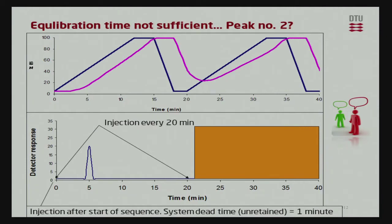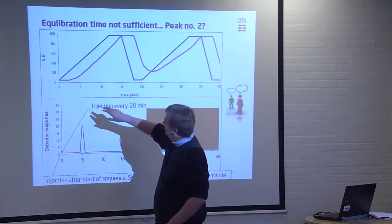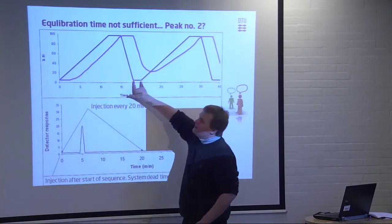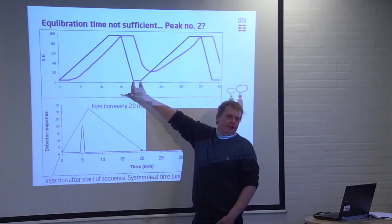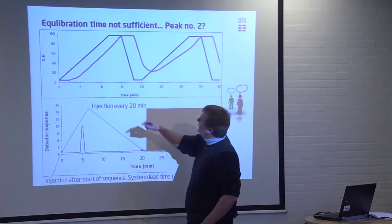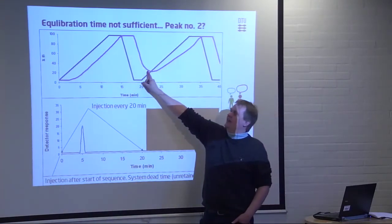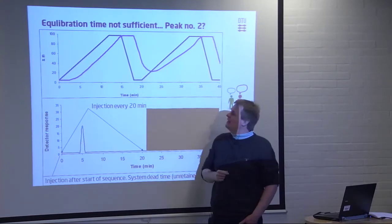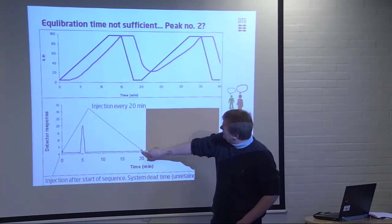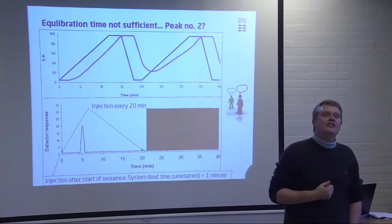And, you have another small assignment here. So, let's say that you programmed it in, and you say, well, I just need two minutes for it to equilibrate after the gradient, and then I'm happy. Then what you really get is this purple curve. So, you can also see we don't get down to the percent organic we think we get, and what do you think happens? If we inject it again here, 20 minutes, here, and we are here, what would happen? We will have good retention of our analyte. No.